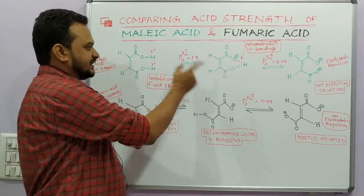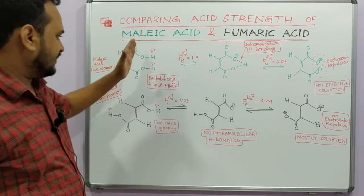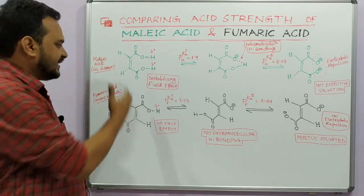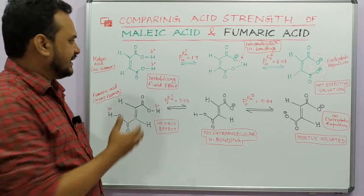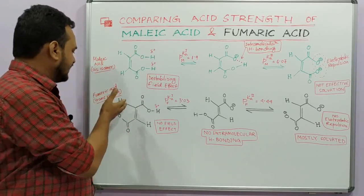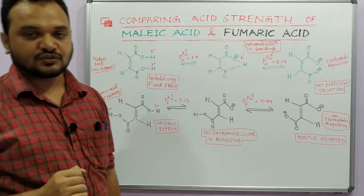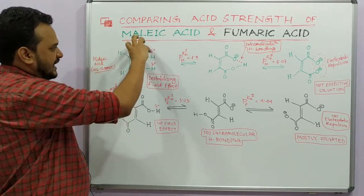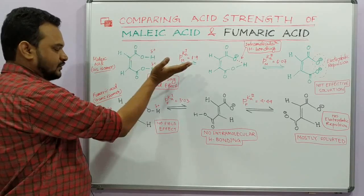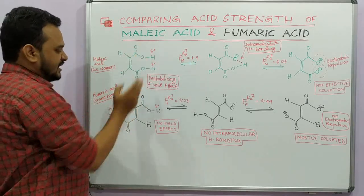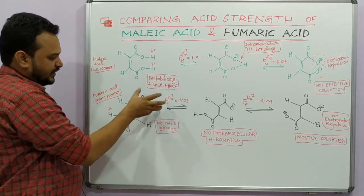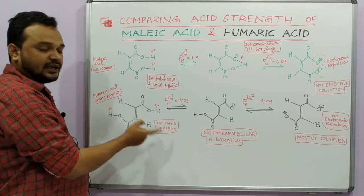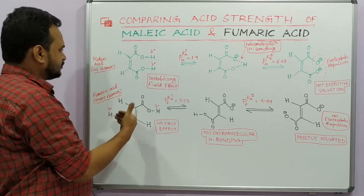So they have two consecutive dissociations. Here I have drawn the structures of maleic acid and fumaric acid. They are actually isomers — maleic acid is the cis isomer and fumaric acid is the trans isomer. In maleic acid the two hydrogen atoms are on the same side, and the two COOH groups are also on the same side.